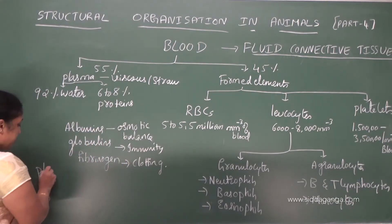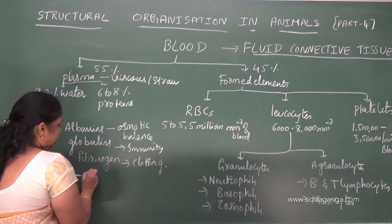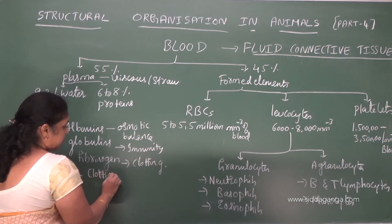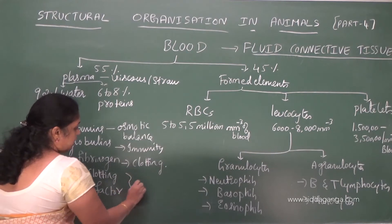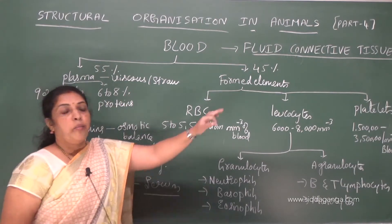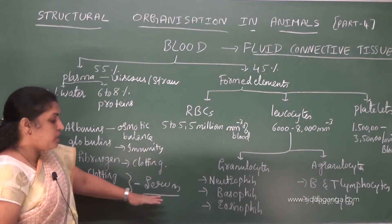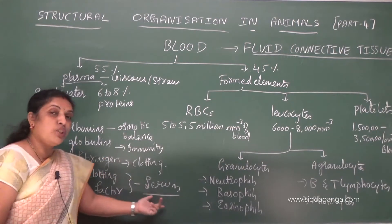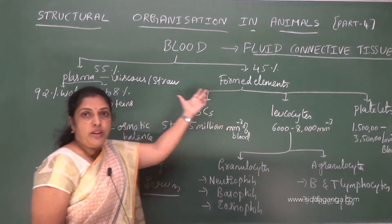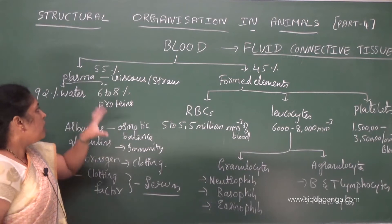Plasma minus clotting factor — that means plasma without fibrinogen — is called serum. So, blood minus formed elements is called plasma, whereas plasma minus clotting factor (fibrinogen) is called serum. That is an important competitive exam question. Blood without formed elements is plasma; plasma without clotting factor is serum.